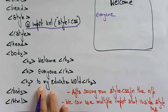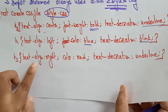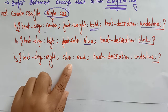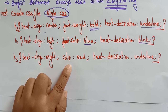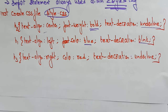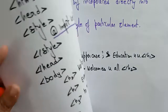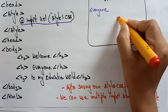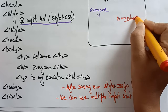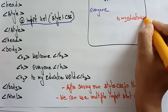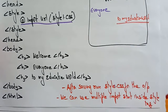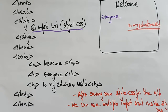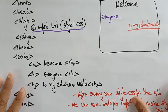H1 is 'Everyone' — text-align is left, color is blue, and text-decoration is blink. So it blinks and appears on the left. Next, H3 has text-alignment right and color red, and text-decoration is underline. It should appear underlined on the right side — 'To My Education World'. So this will be the output for the imported cascading style sheet.